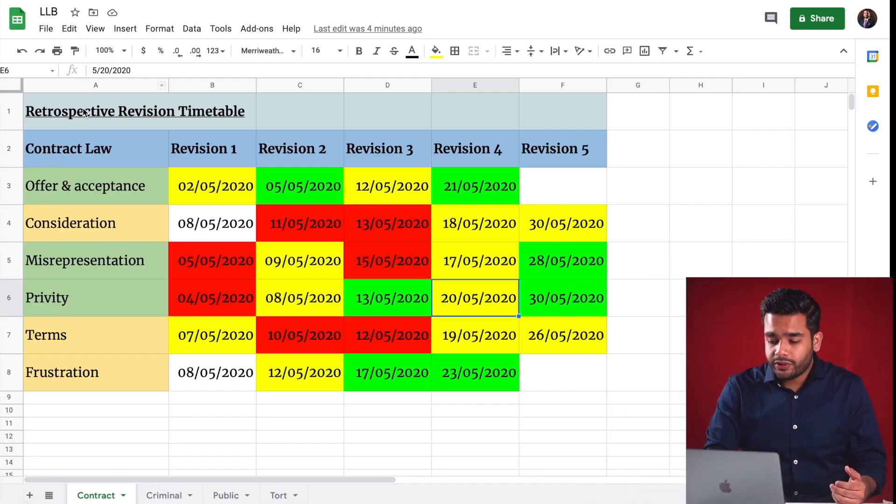This is easily doable in a simple Excel sheet or Google sheet. On the first column, simply divide your syllabus into different chapters, concepts or different sections. On the following columns, you can put today's date on the sections that you have revised today. You can also color code the date based on your understanding of it.